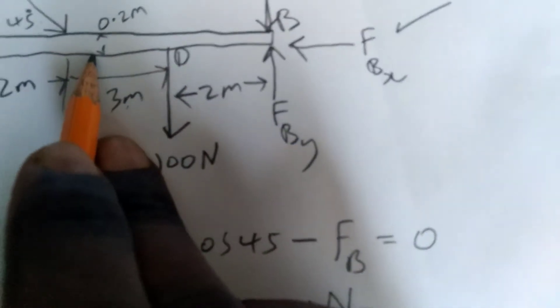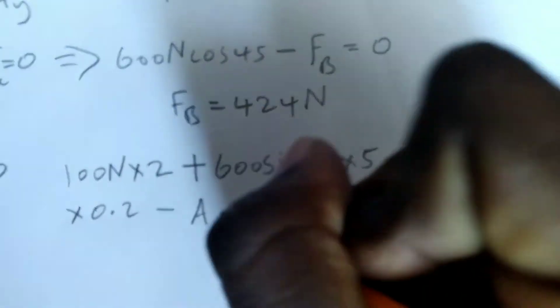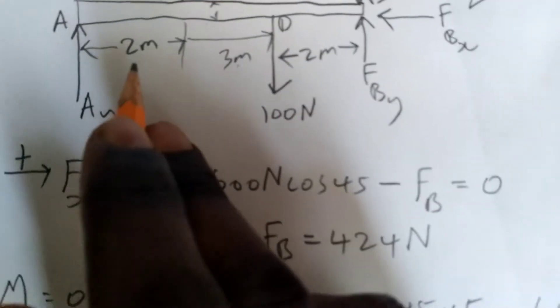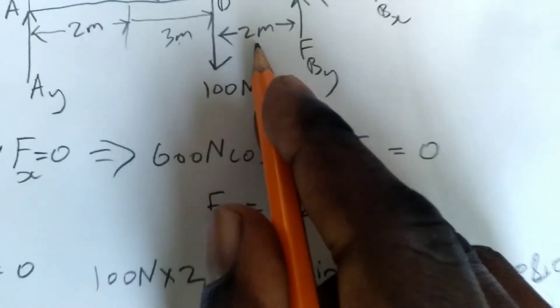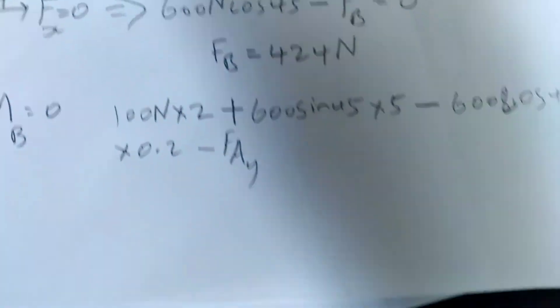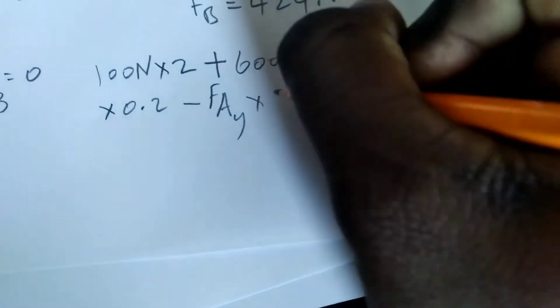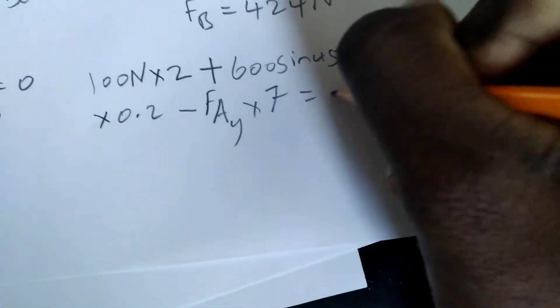The cosine component distance is 0.25. Then minus F_Ay times a distance of 7 meters, equal to zero. Plugging into a calculator, F_Ay equals 319 newtons.